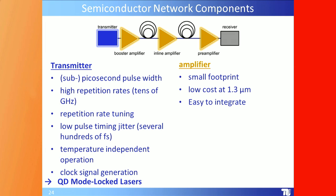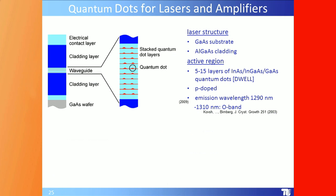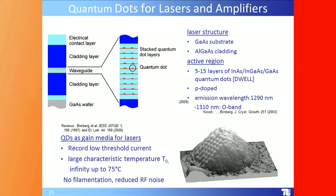The devices we use for both lasers and amplifiers use classical III-V semiconductor technology with stacked quantum dot layers — starting with a GaAs substrate, AlGaAs cladding, then five to fifteen layers of InAs/GaAs quantum dots using a dot-in-a-well approach, p-doped, with emission wavelengths from 1290 to 1310 nm (the O-band). We achieve record low threshold current density, meaning very energy-efficient lasers, and a very large characteristic temperature T₀ — effectively infinite up to about 70–75°C — so no Peltier cooling is needed.